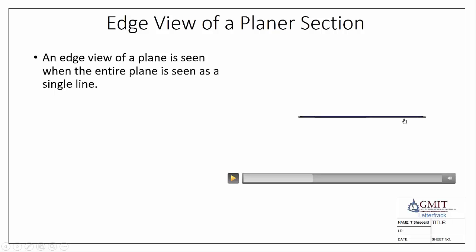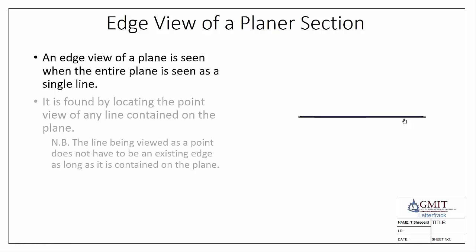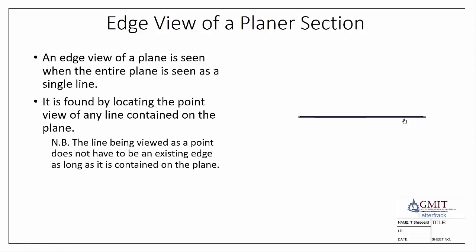How we go about finding that edge view is by locating the point view of any line on the plane. It's worth noting that the line we use to get the point view can be an existing edge or just any line drawn on the object — it doesn't have to be an existing boundary edge.